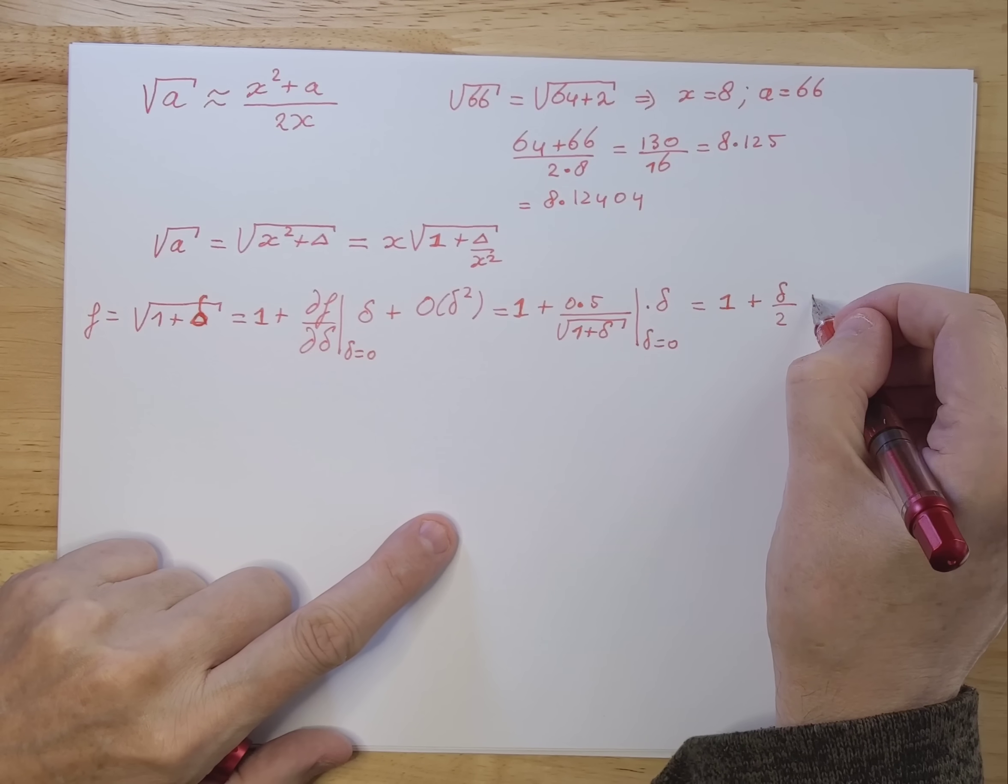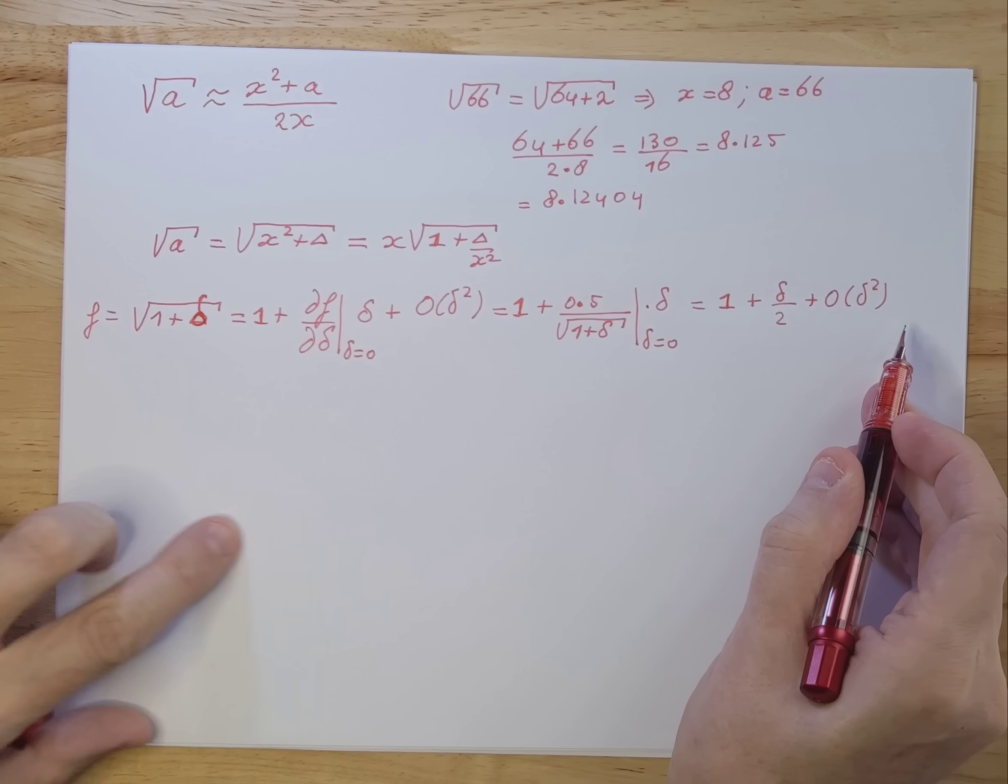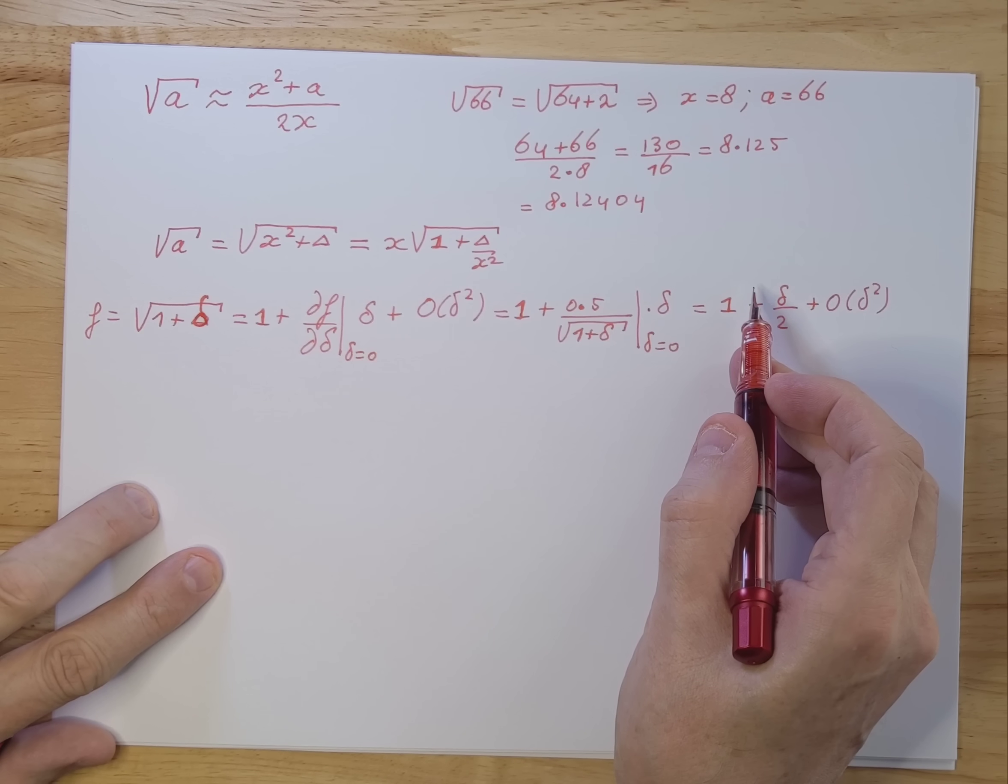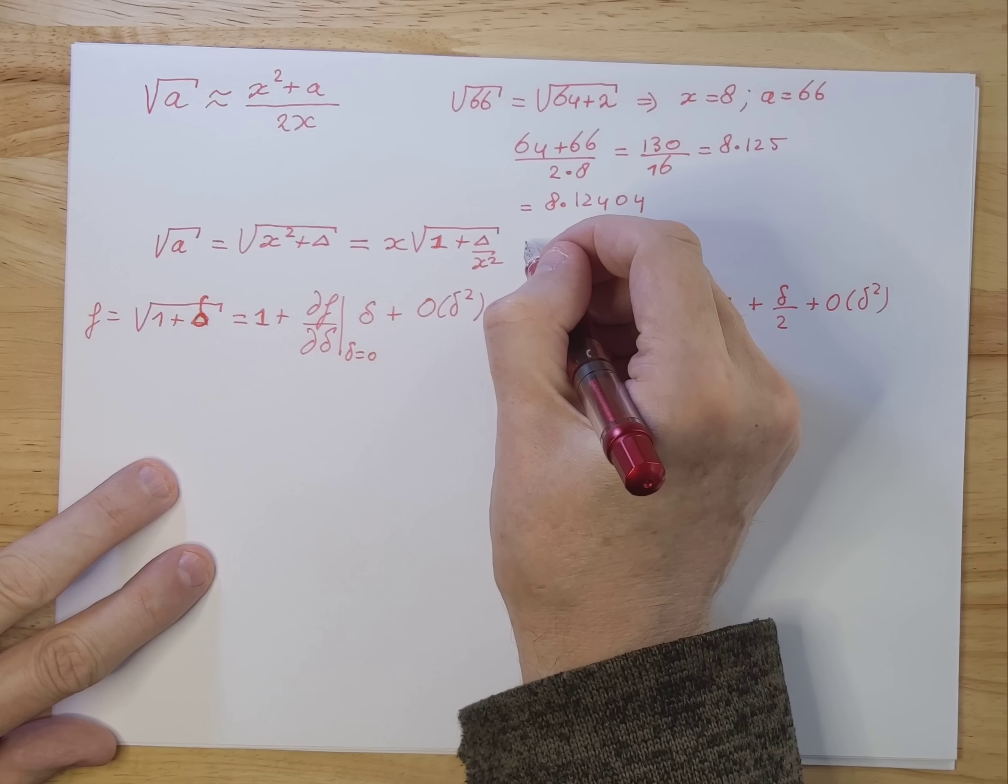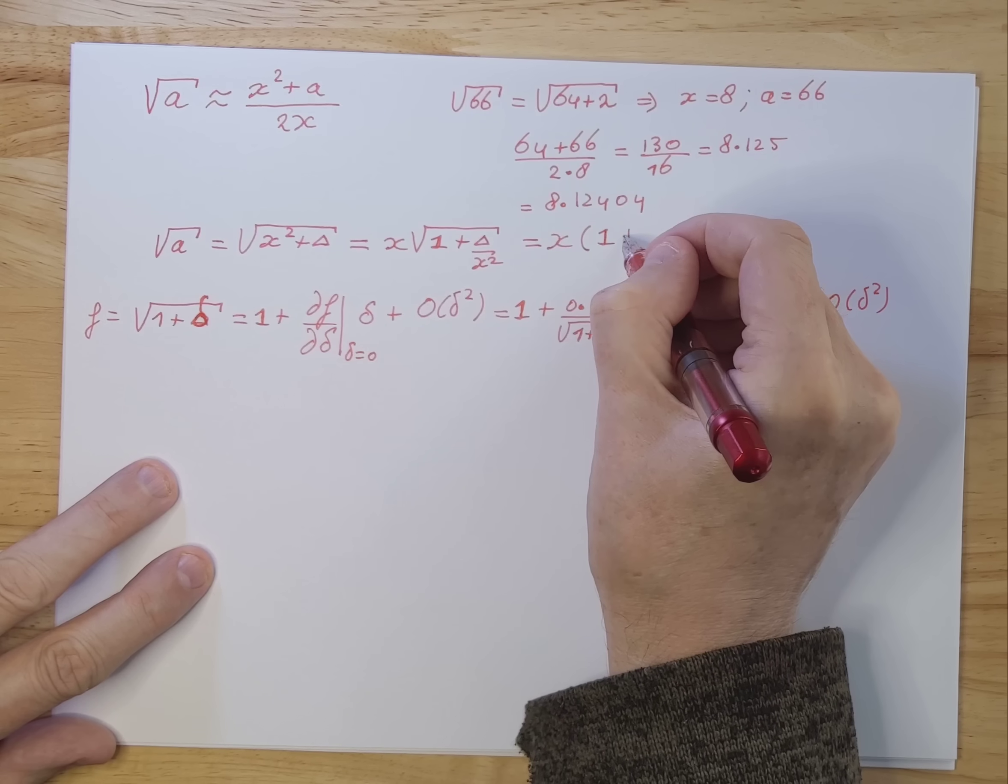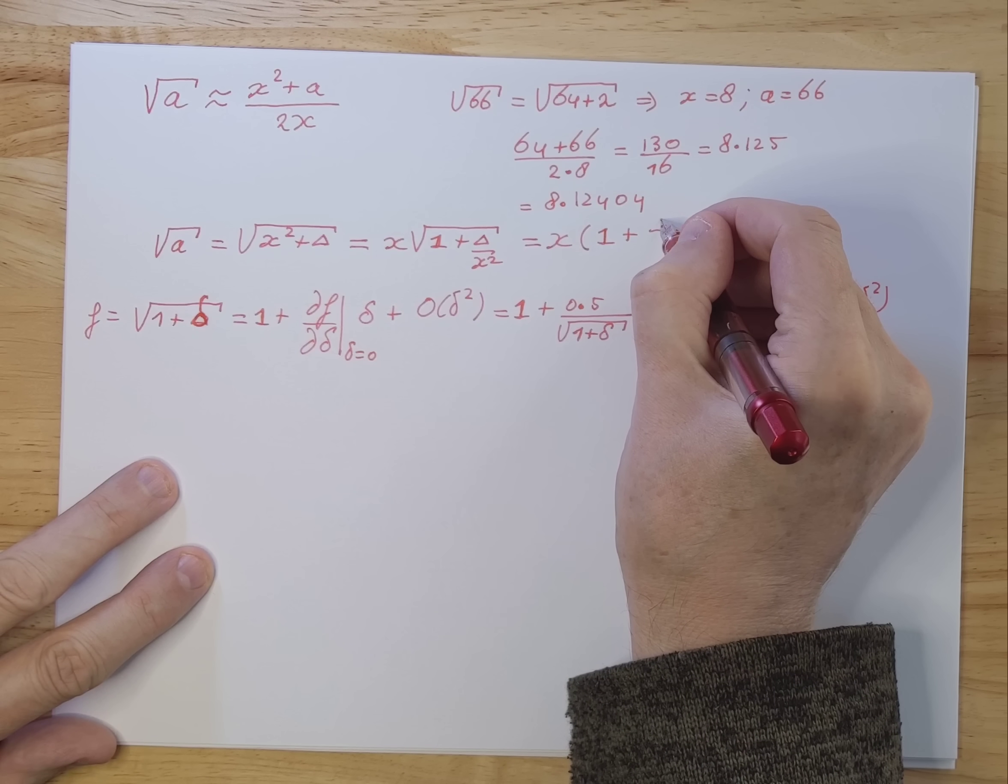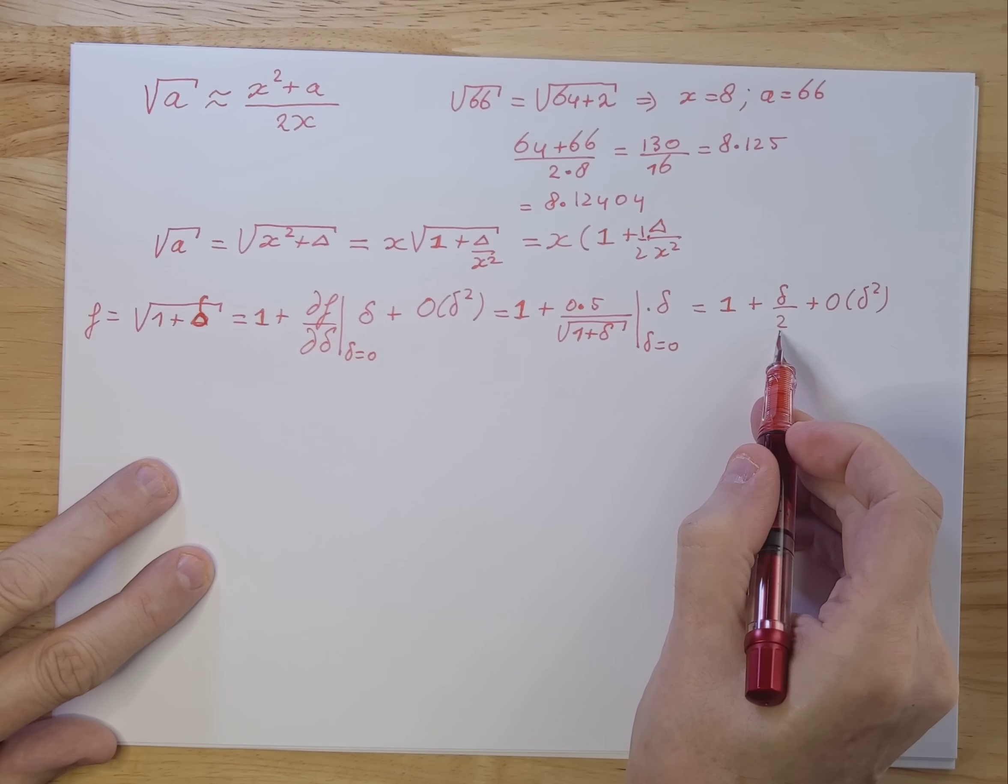So what you end up getting is 1 plus delta divided by 2, plus smaller terms. But I'm going to not talk about those because we're only going to take the first two terms here, all the way up to delta. So translated here, what that means is that you get something like x times 1 plus, and now this delta here is obviously this whole thing. So you get delta divided by x squared times that half, times the half we have there.